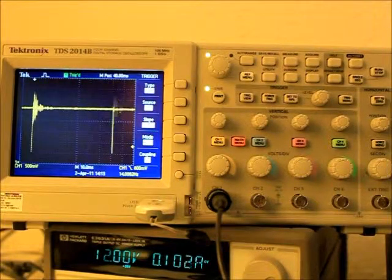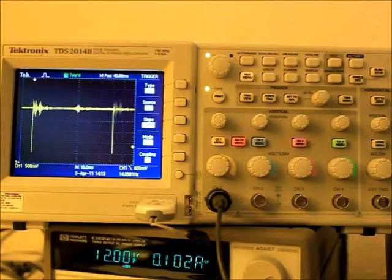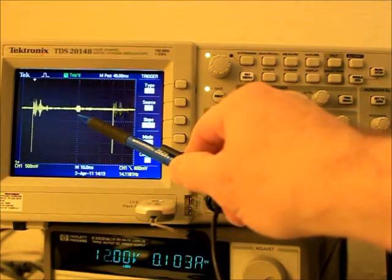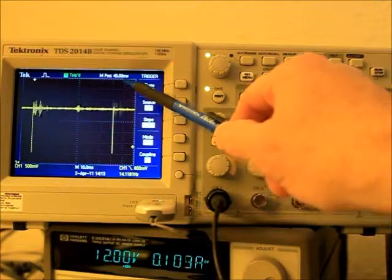While looking at the receiver signal using a long time base setting, we will set up an object in the received field of view. You can see the reflected energy here is from the object about 20 feet away.